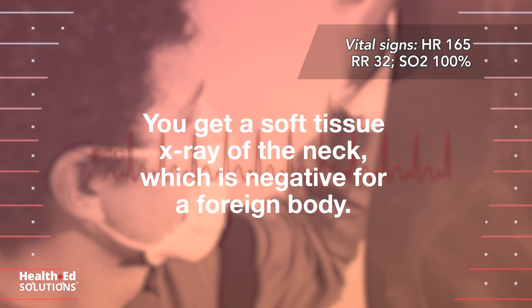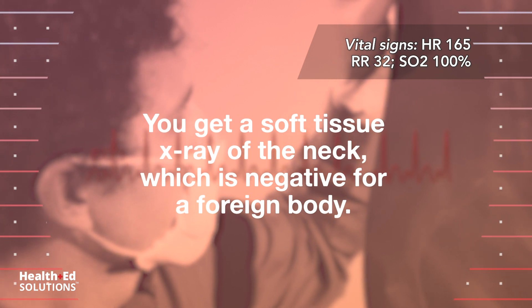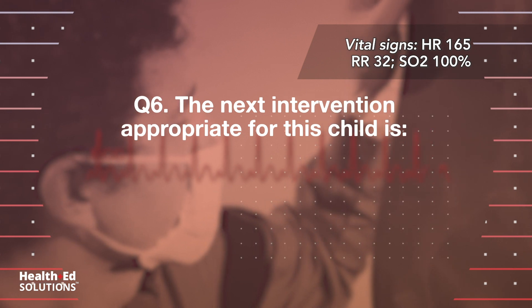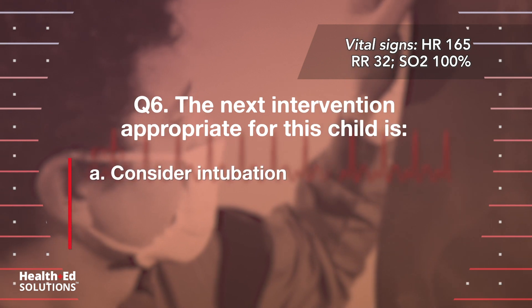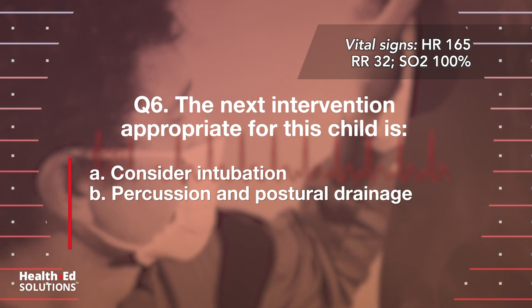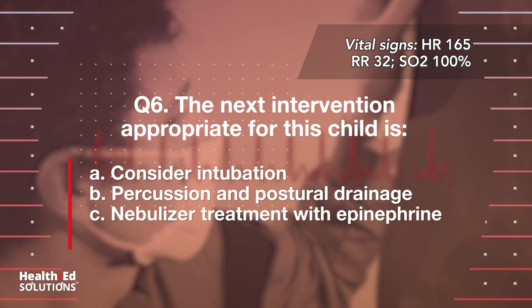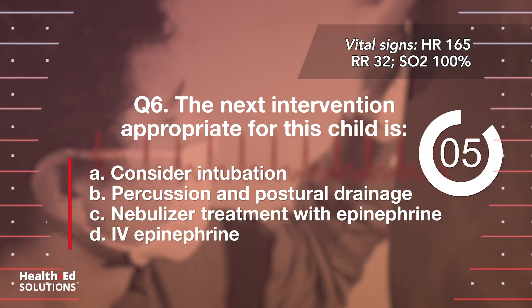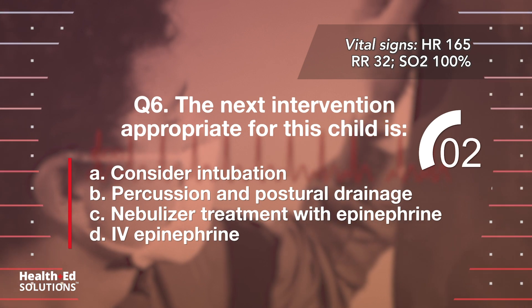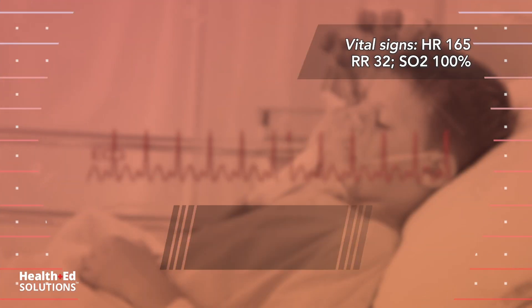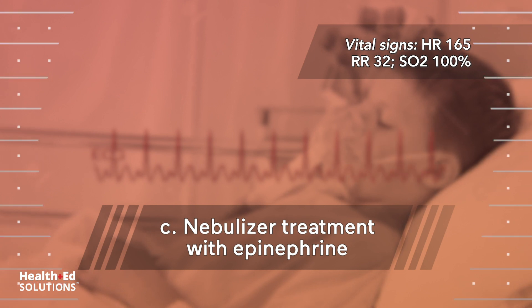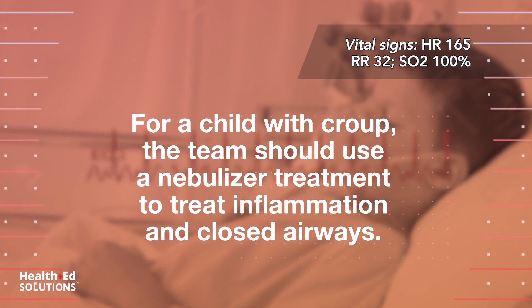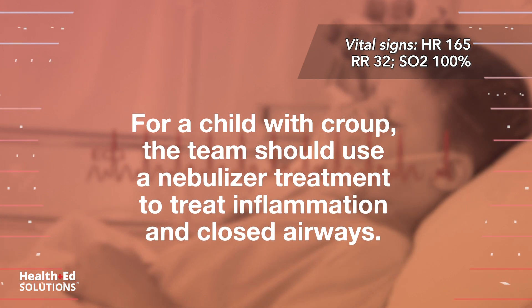You get a soft tissue x-ray of the neck, which is negative for a foreign body. Question 6: The next intervention appropriate for this child is: A) consider intubation; B) percussion and postural drainage; C) nebulizer treatment with epinephrine; D) IV epinephrine. Correct answer C — nebulizer treatment with epinephrine. For a child with croup, the team should use a nebulizer treatment to treat inflammation and closed airways.